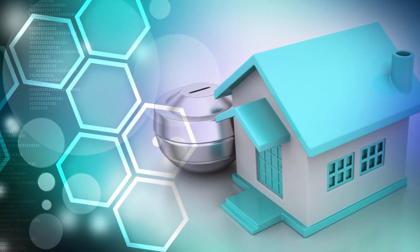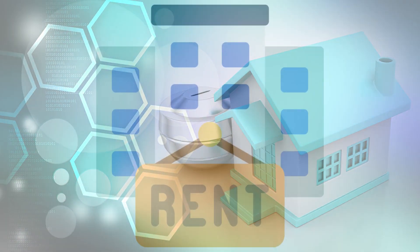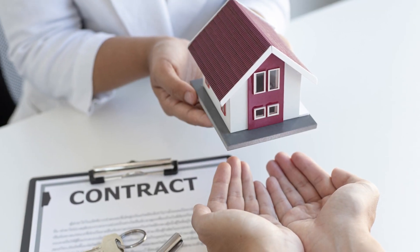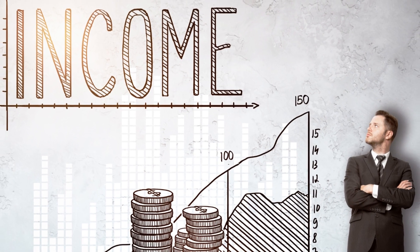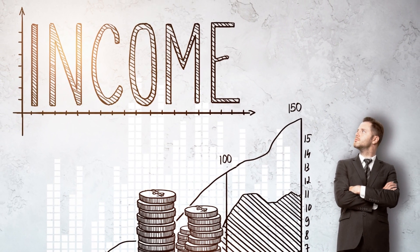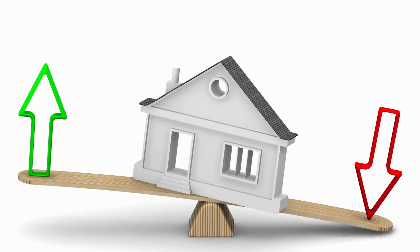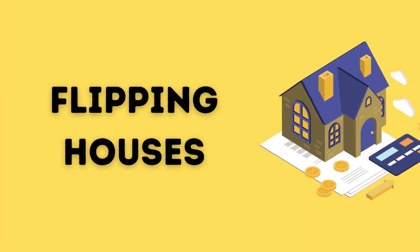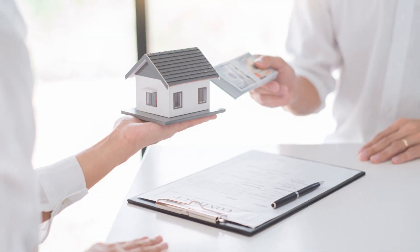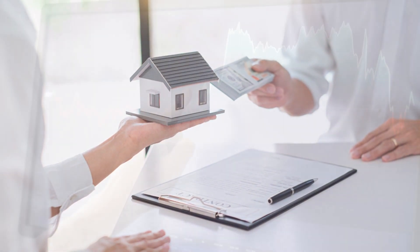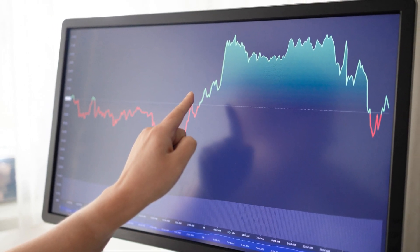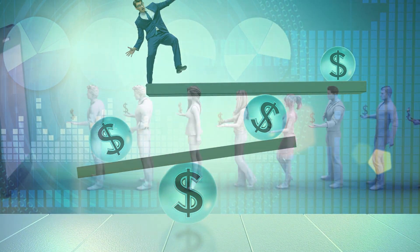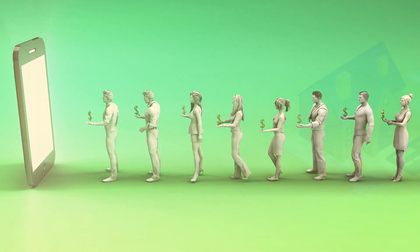Buy and hold is a classic way to invest in real estate. You buy a property and rent it out to tenants, who pay you rent each month. This can provide you with a steady stream of income, and the value of the property may also appreciate over time. Fix and flip involves buying a property, fixing it up, and then selling it for a profit. This can be a more risky investment, but it can also be more lucrative.